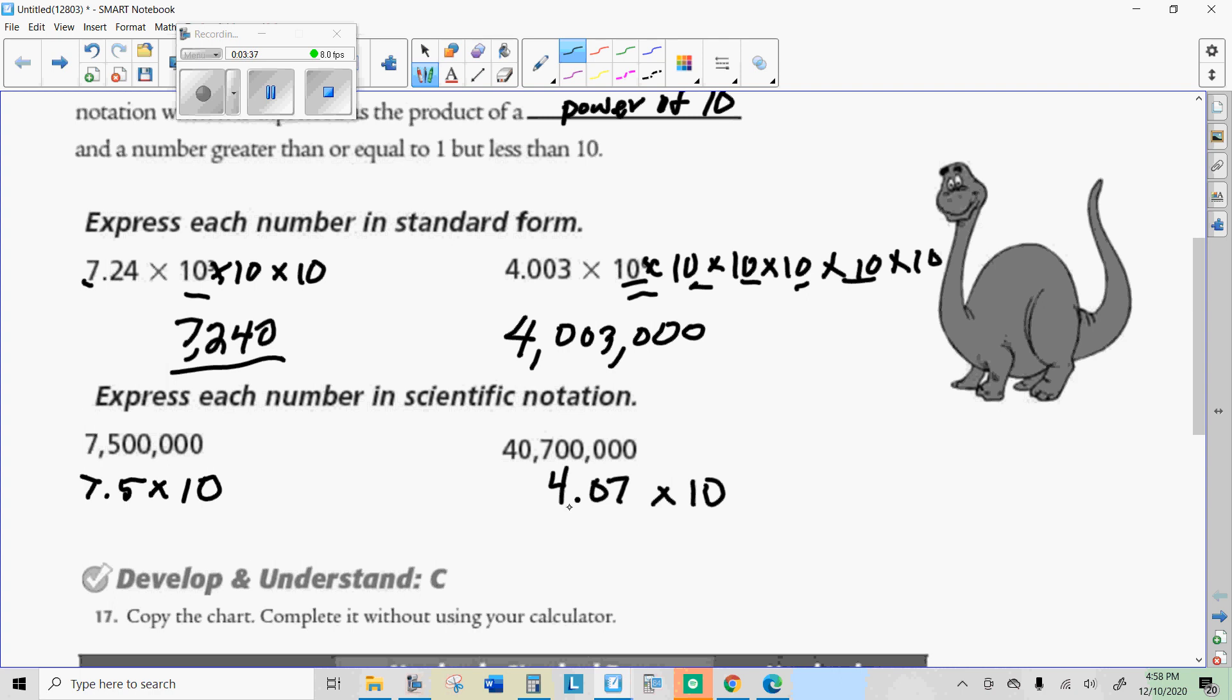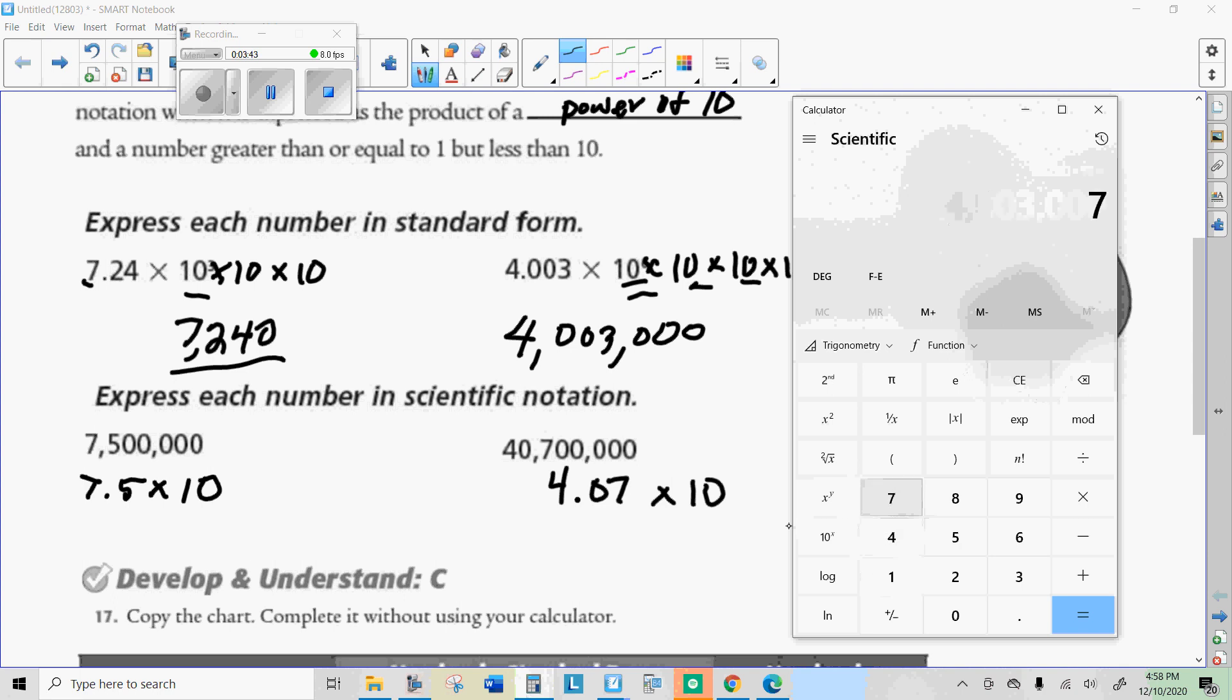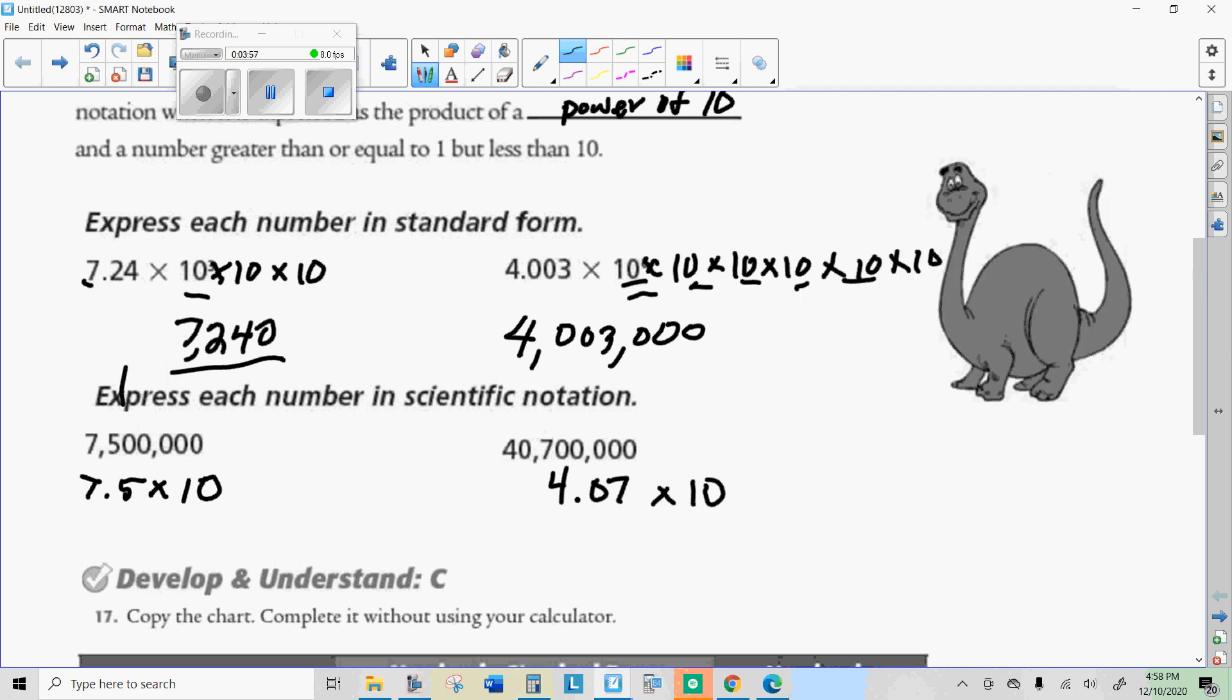And so if you want, on your calculator, you could just do the 7.5 times 10, there was one time, 2, 3, 4, 5, 6, until you see this number here. And that'll be your power. But notice that there's six digits also there. That'd be another way to count it. So in this one, from this decimal here to the end, there's seven places we need to move it. That's how I remember it anyway.